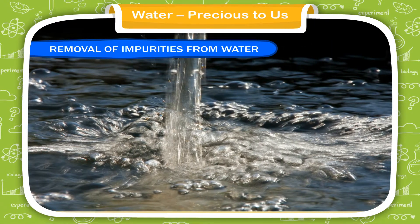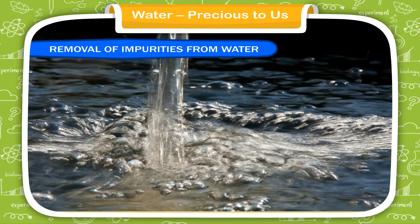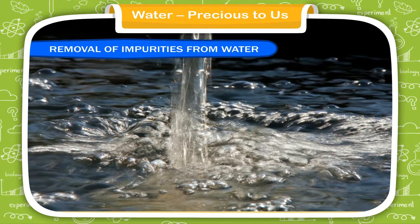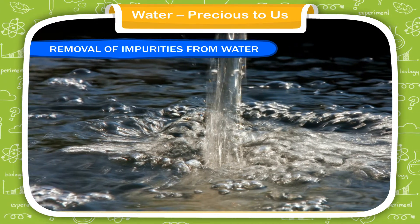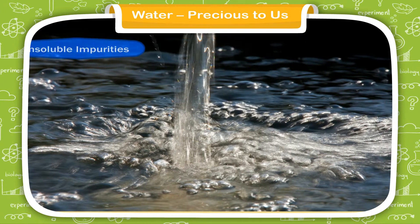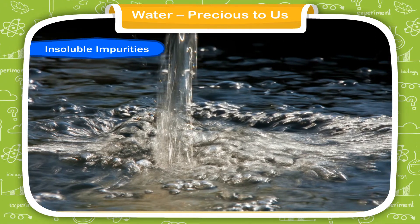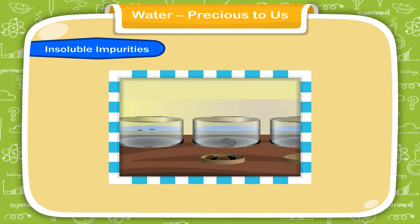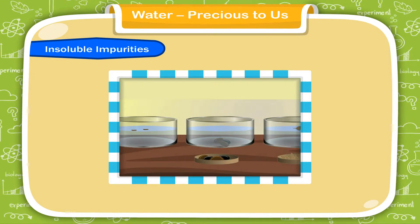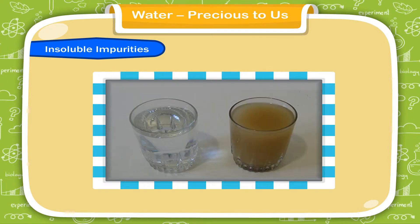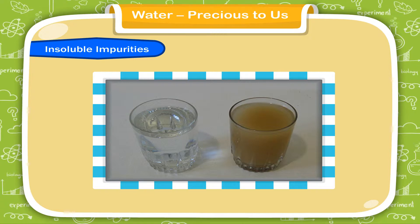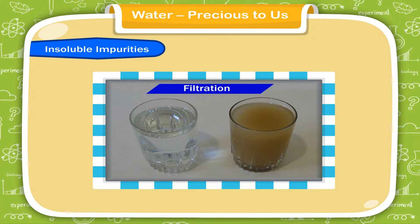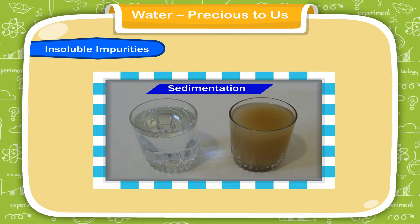Removal of impurities from water: insoluble and soluble impurities are removed in different ways. Insoluble impurities are those which do not dissolve in water. They are removed by different methods like filtration, sedimentation, and decantation.